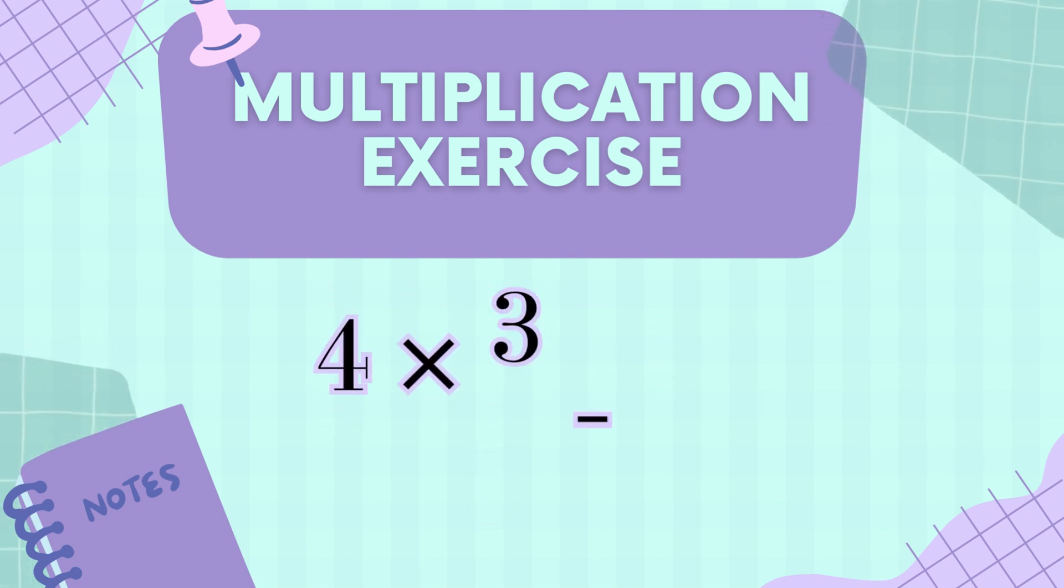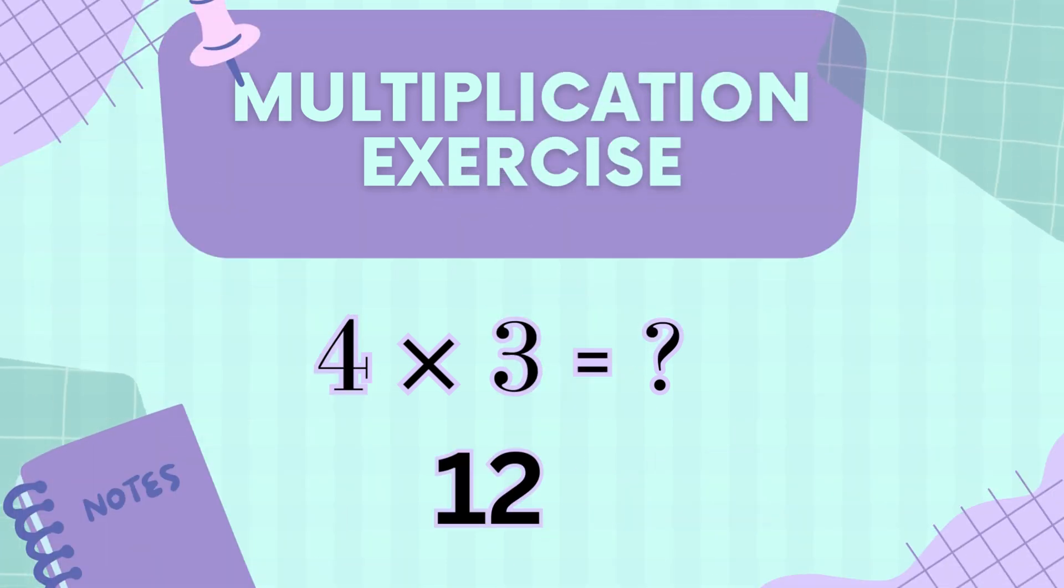Moving on to four times three! Imagine you have four groups, and each group has three things. Count them! Three, six, nine, twelve! That's twelve! Slow and steady wins the race! Let's continue!